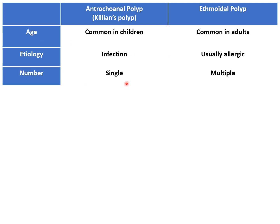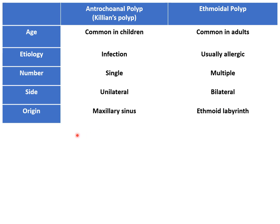Antrochoanal polyps are single, while ethmoidal polyps are multiple. Antrochoanal polyps are unilateral most of the time, while ethmoidal polyps are bilateral. Antrochoanal polyps originate from the maxillary sinus, while ethmoidal polyps originate from the ethmoidal air cells, also called the ethmoid labyrinth.